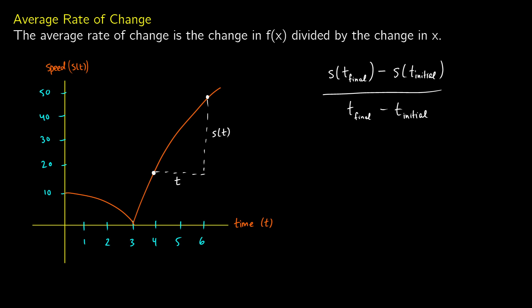You can do this with f of x instead of s of t — it's going to work out the same. In this case, at t equals 4, s of t is about 48. This point on the right is going to be our function at t final, and our leftmost point is going to be s of t initial. So we're picking the initial time to be 4 and the final time to be 6.